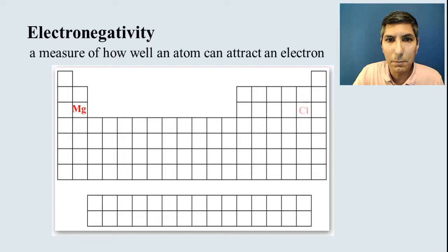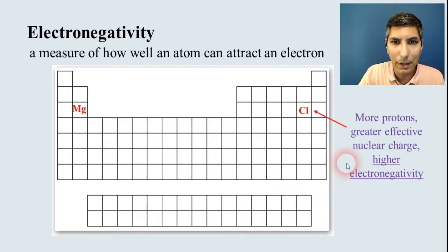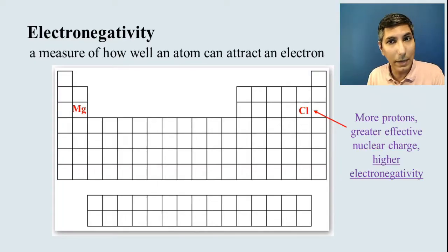Let's compare these two atoms right here, magnesium and chlorine. Which one of those is going to attract an electron more effectively? Well, let's think about what's going on here. Chlorine has more protons than magnesium. It has a greater effective nuclear charge, as you might remember in our graphic from the last video. And as a result, since it has greater effective nuclear charge, it can attract electrons in much better. So higher electronegativity.